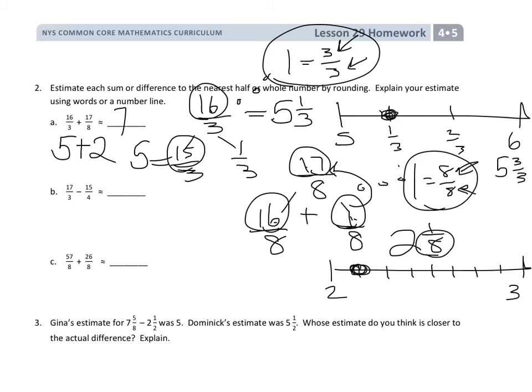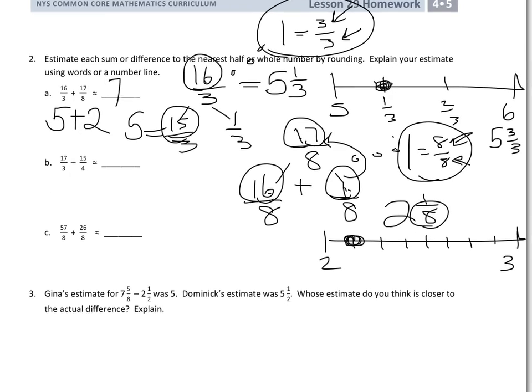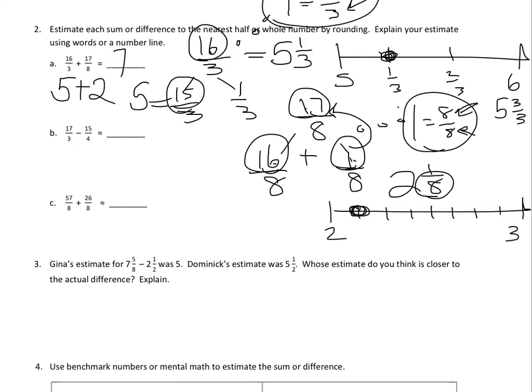Students are going to follow the same process for problems B and C — creating a number bond so that their improper fraction becomes a mixed number of a whole number and remaining fraction, then putting that on a number line to see which whole number it's closest to for their estimate.